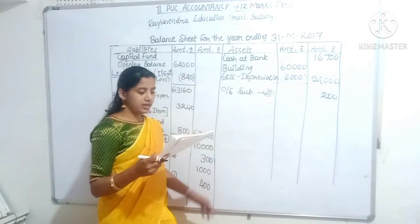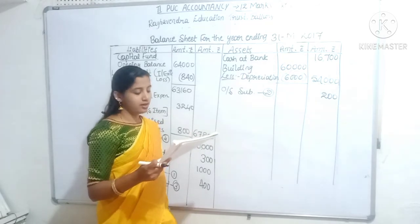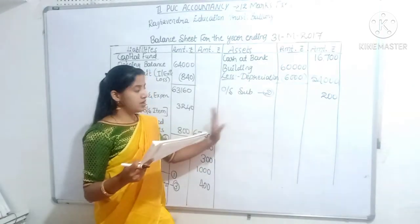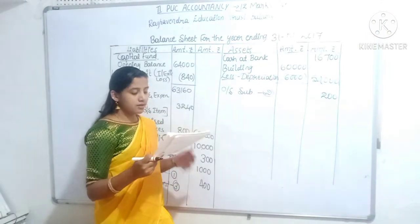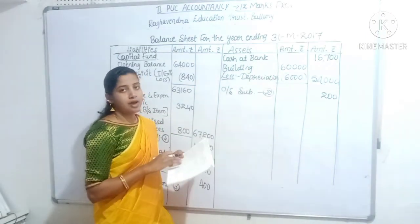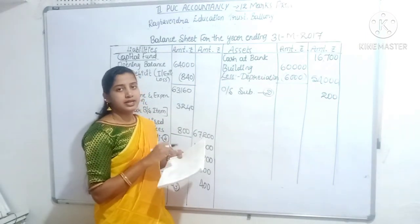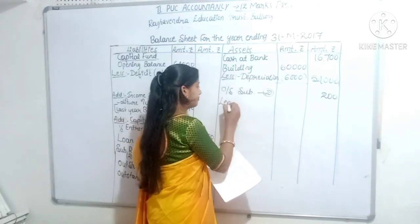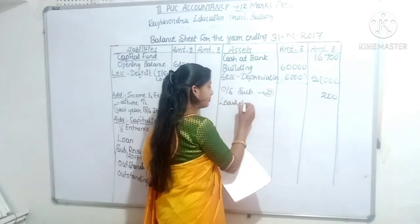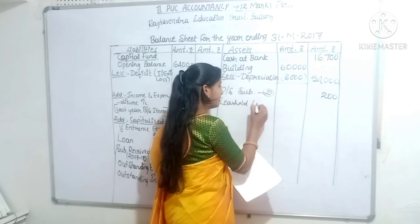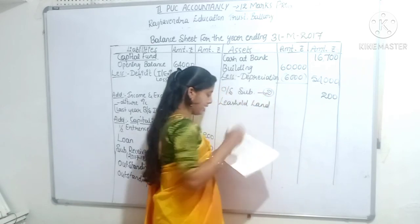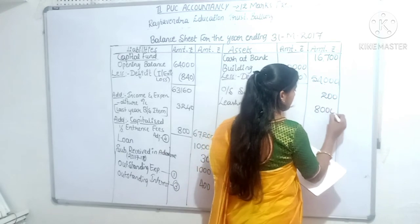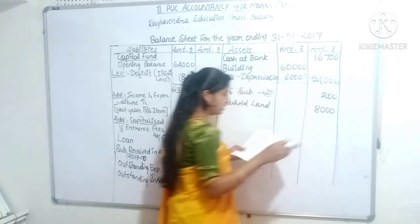Next: outstanding rent - current year adjustment. Payment schedule asset items entry: lease hold land entry - lease hold land Rs. 8,000.